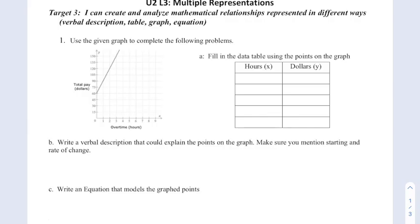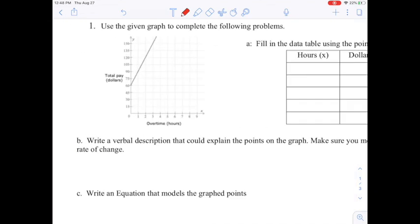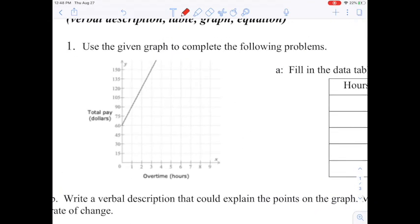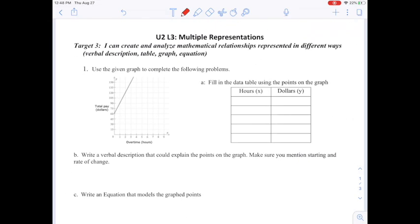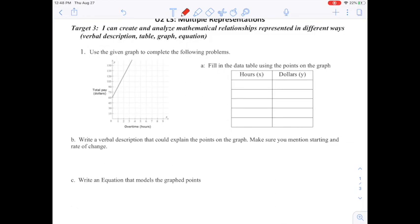So in this section, you're either going to be given a graph, table, verbal description, or equation that you need to use to go and find the other ways of representing a relationship. In this problem, we are given a graph first, and we're going to use that graph to then get a table.